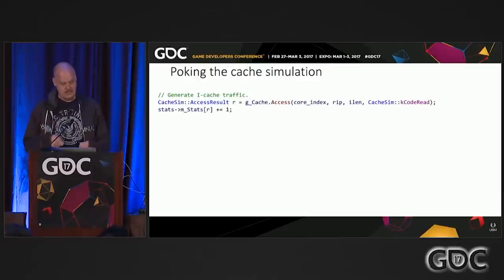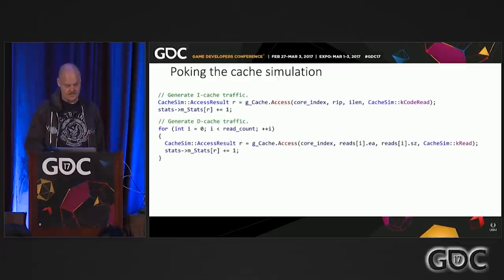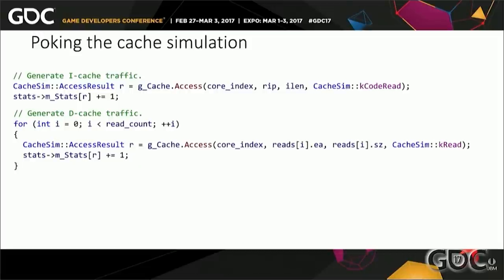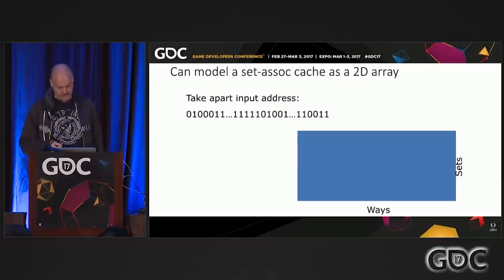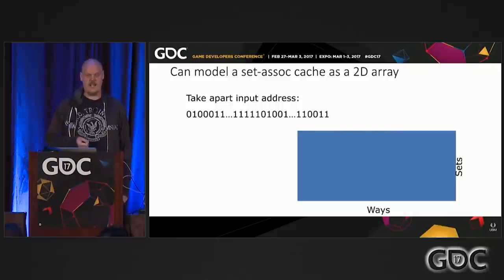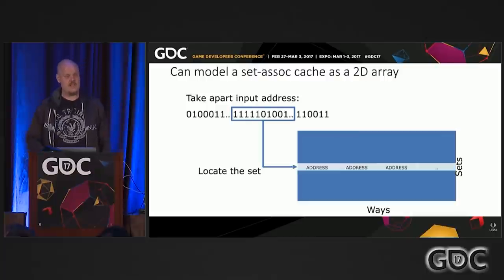Once we've figured out the memory accesses, we poke our cache. We do an instruction read from the fetch address, then reads and writes from the data operands. How do you simulate a cache? If you're familiar with caches, they have set associativity — you can break them down as a two-dimensional array of ways and sets. To see if something is in the cache, you take the input address, use certain bits depending on the number of sets, look at the cache lines associated with that set — those are the ways — and run a comparison against all of them. Hardware can do this as a parallel comparison; software can't, but that's the theory.